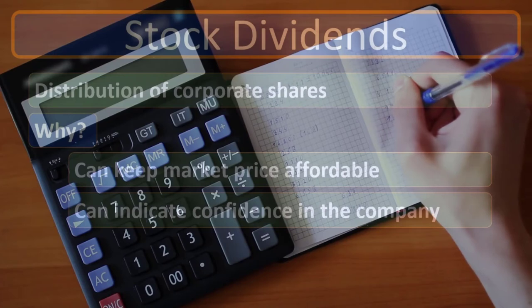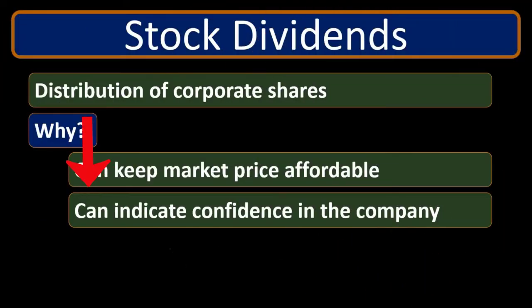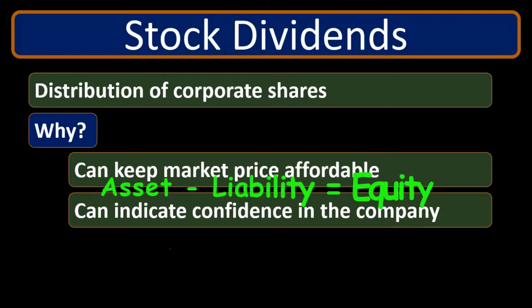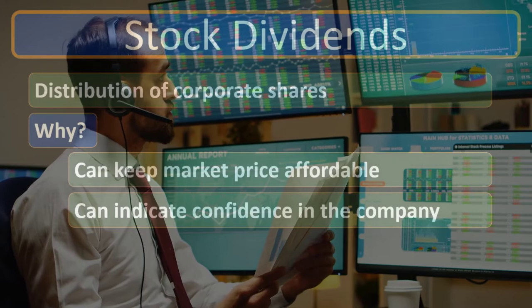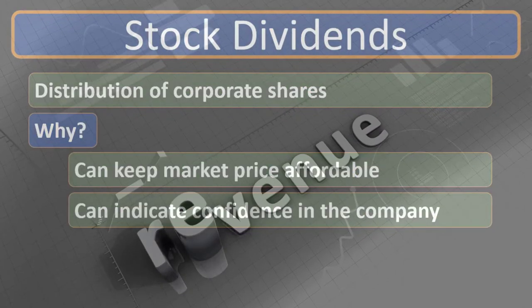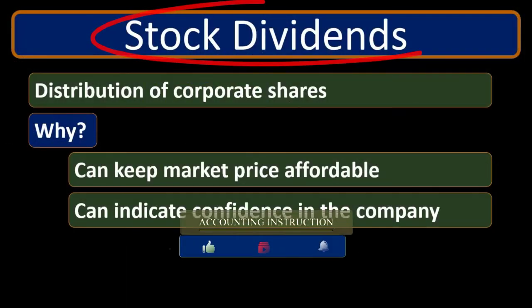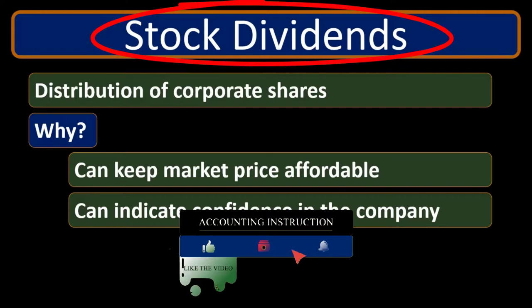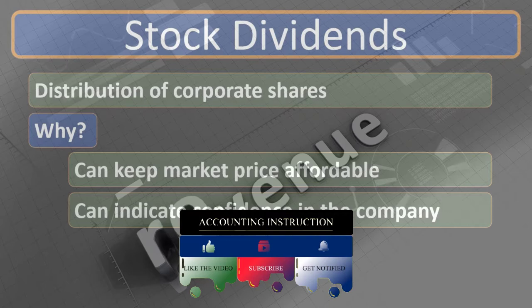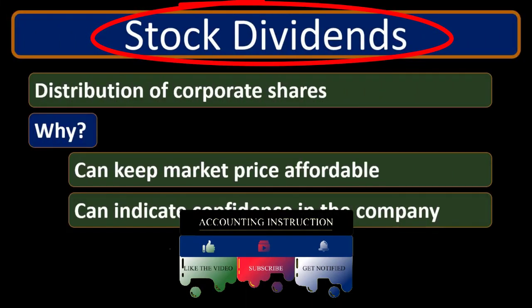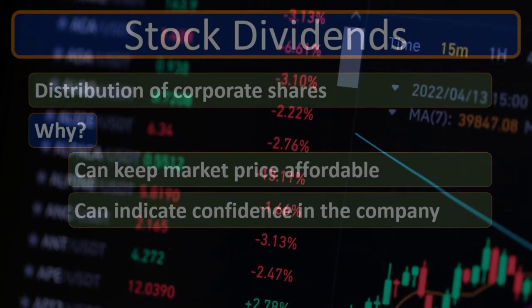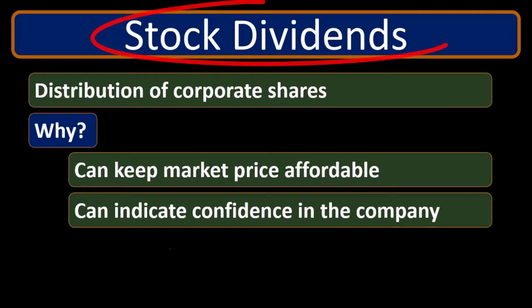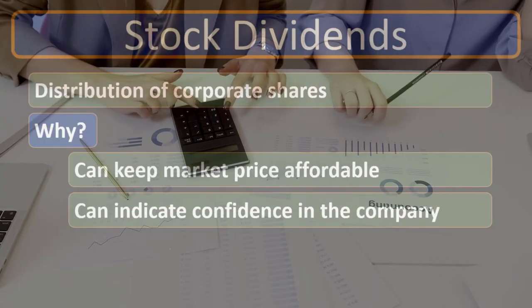Consider what's really happening in the equity section: assets minus liabilities equals equity, which is broken into two major components — the initial investment, the common stock portion, and the accumulation of revenue less dividends over time, which is retained earnings. When we have a stock dividend, we're reducing the retained earnings — the accumulation of revenue over time — and transferring that to the common stock side, the initial investment portion. So we're reducing one side of the equity section and increasing the other side.